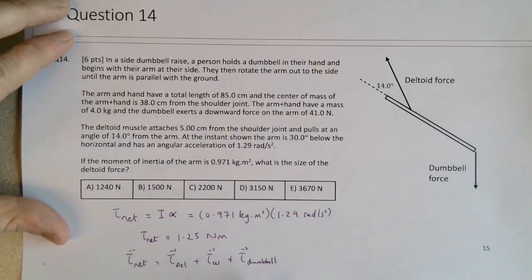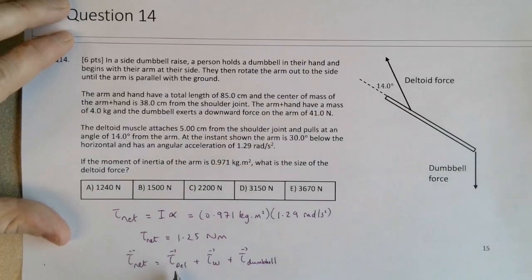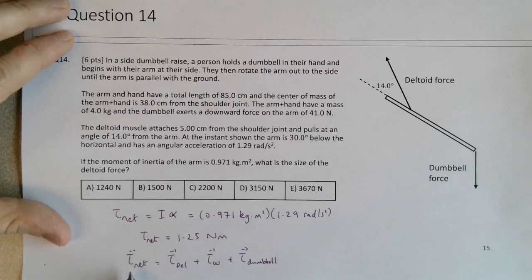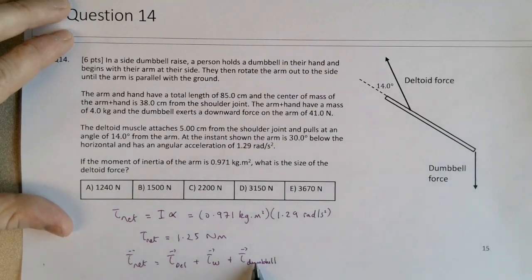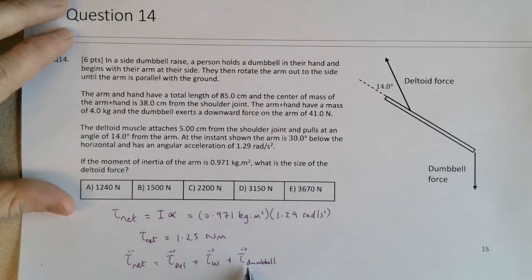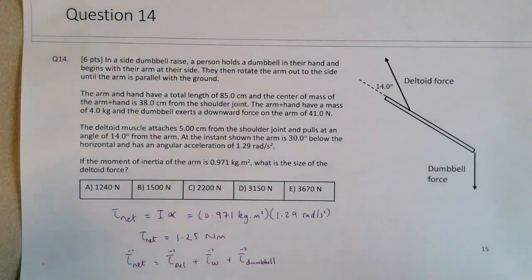So we can figure out the deltoid force if we can figure out the size of the deltoid torque, and that will be basically torque net minus torque weight minus torque dumbbell. We're going to be careful about the signs once we get to that part of the problem. This is all I'll do on this page and I'll refer back to this page once I'm drawing on a blank page. Let's start with something blank here, give us some room.